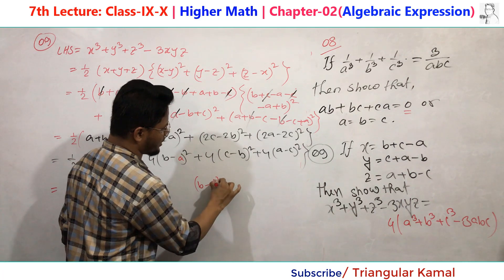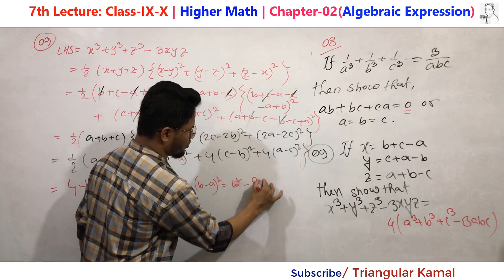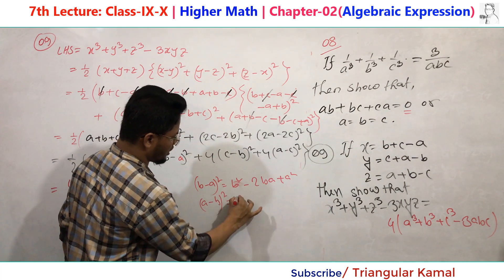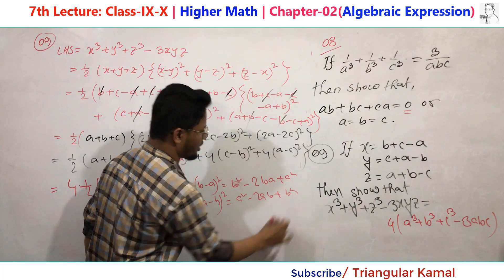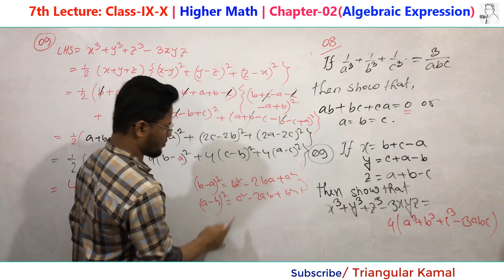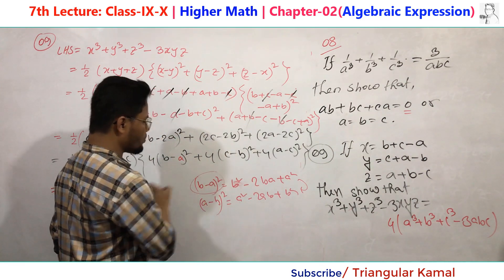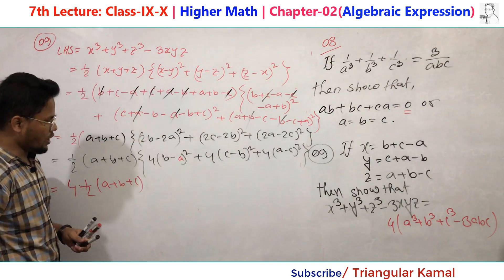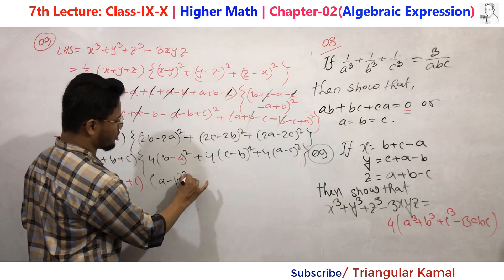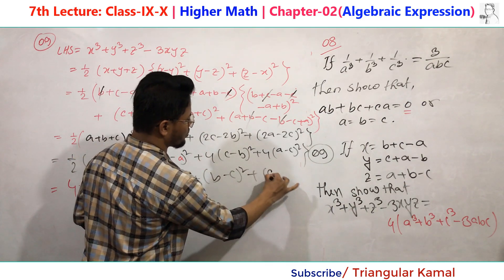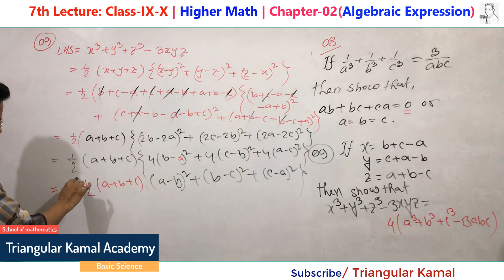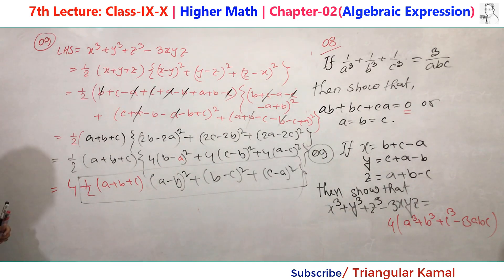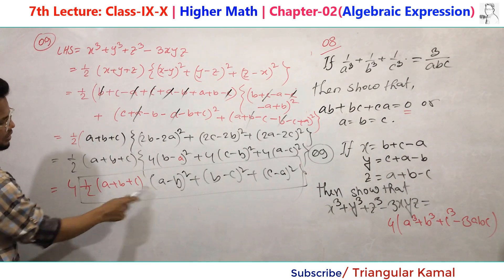Note that (b - a)² and (a - b)² are the same: expanding (b - a)² gives b² - 2ab + a², and (a - b)² gives a² - 2ab + b² — both are identical. So (b - a)² = (a - b)², (c - b)² = (b - c)², and (a - c)² = (c - a)². We can therefore rewrite as 4(a - b)² + 4(b - c)² + 4(c - a)².